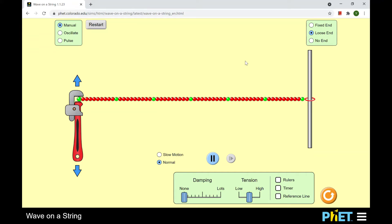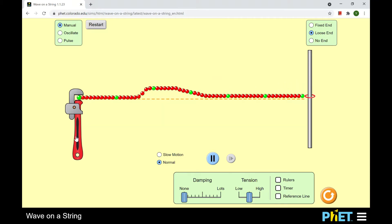The problem two of today's lab is similar to problem one, except one end of the string will be loose. So if you send a pulse, you can see it will be reflected on the same side.